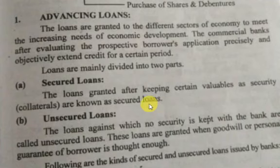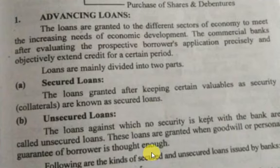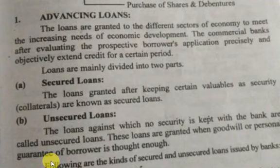Secured loans kya hote hain — jinki bank ke paas koi security hoti hai, woh loans secured hote hain. Aur aise loans jinki bank ke paas koi security nahi hoti, unhe kaha jaata hai unsecured loans. Yani agar main koi collateral security — koi property ya kuch bhi — bank ke paas loan ke iwaz nahi rakhwa rahi, to woh unsecured loan hai. Unsecured loans mostly customer ki goodwill ya personal guarantee ki base pe grant kiye jaate hain.